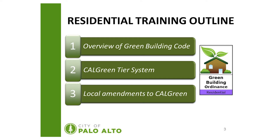In this video we're going to be going over three components. First we'll perform a brief review of the green building code, then we'll jump into the Cal Green tier system, and we'll also be reviewing the local amendments to the Cal Green code. You'll notice on the right-hand side the icon that designates the green building ordinance requirements for residential projects.